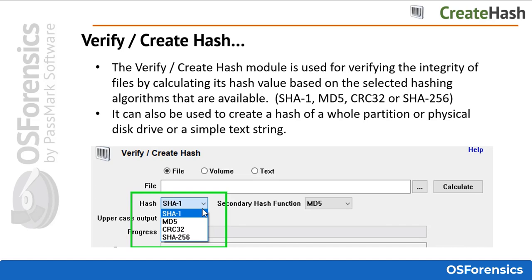The Verify Create Hash module is used for verifying the integrity of files by calculating its hash value based on the selected hashing algorithms that are available, which are SHA-1, MD-5, CRC-32, and SHA-256. It can also be used to create a hash of a whole partition, physical disk drive, or a simple text string.